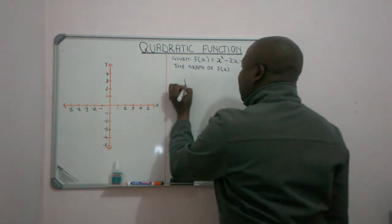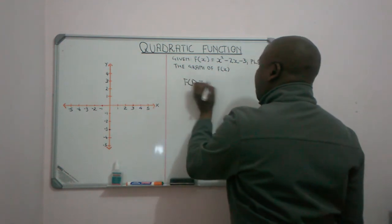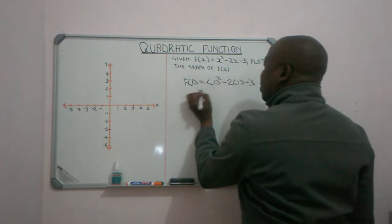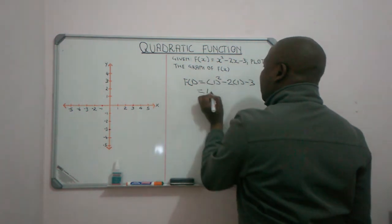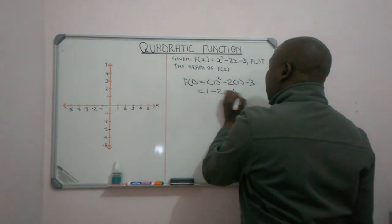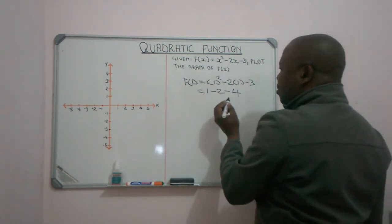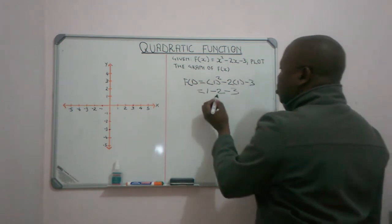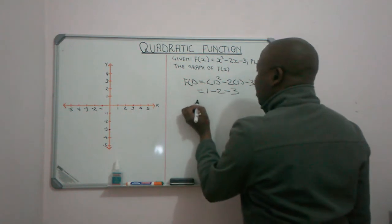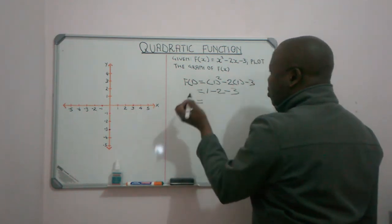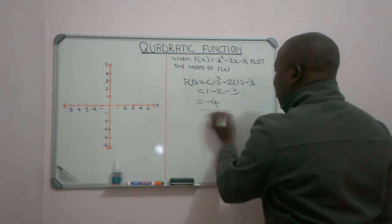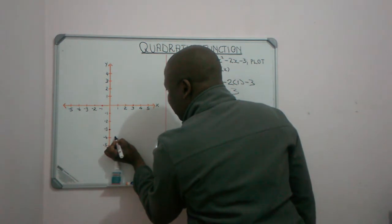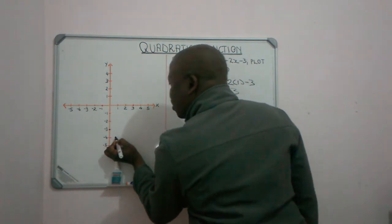x equals 1, and we substitute that into our original equation. So we get y equal to 1 squared minus 2 times 1 minus 3, which is 1 minus 2 minus 3. That gives us minus 4. That is our y coordinate, meaning our turning point will be (1, minus 4).